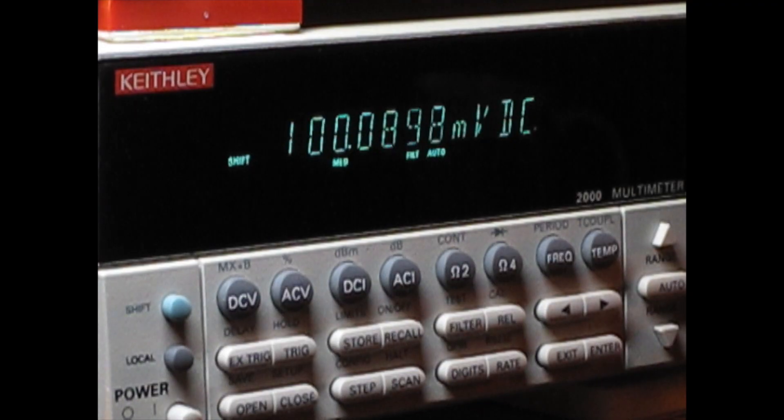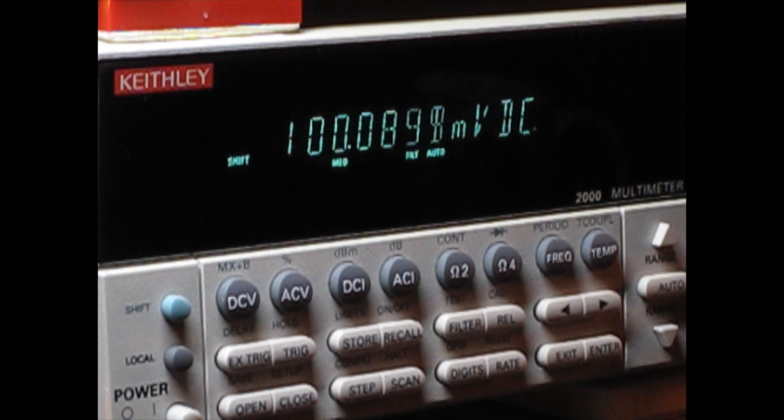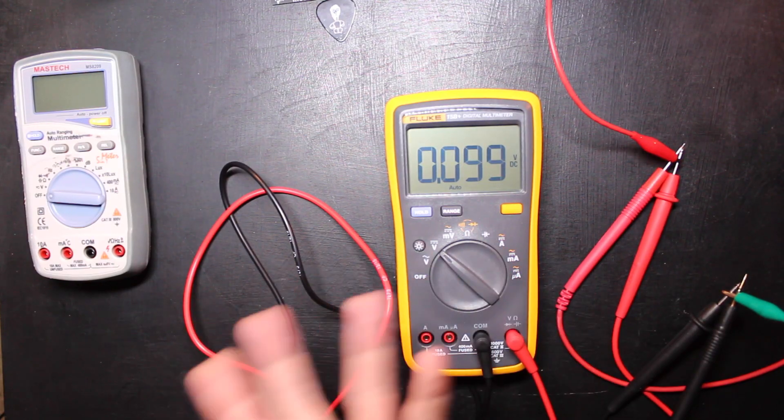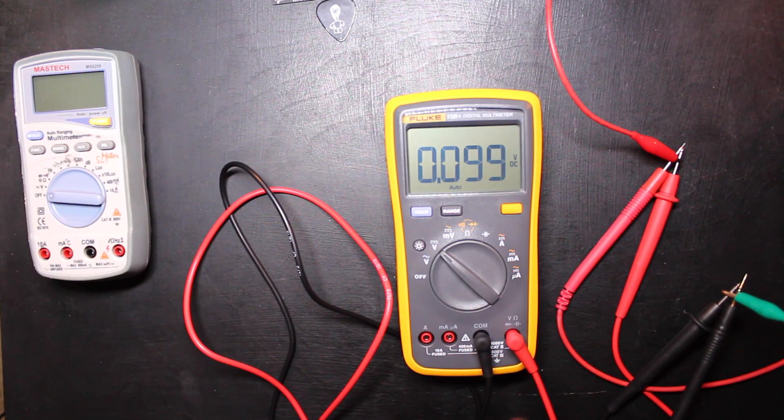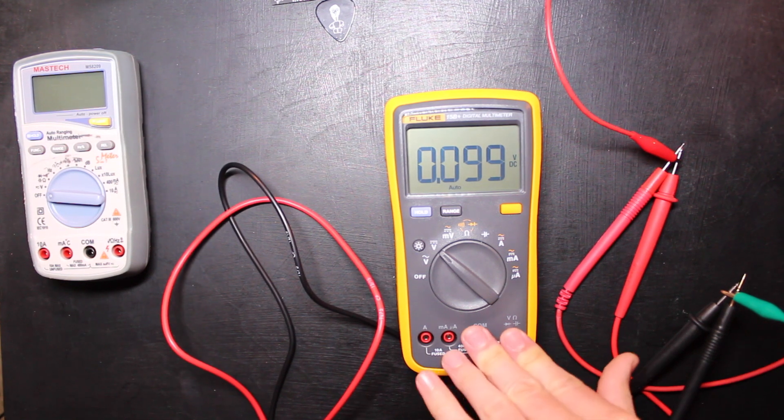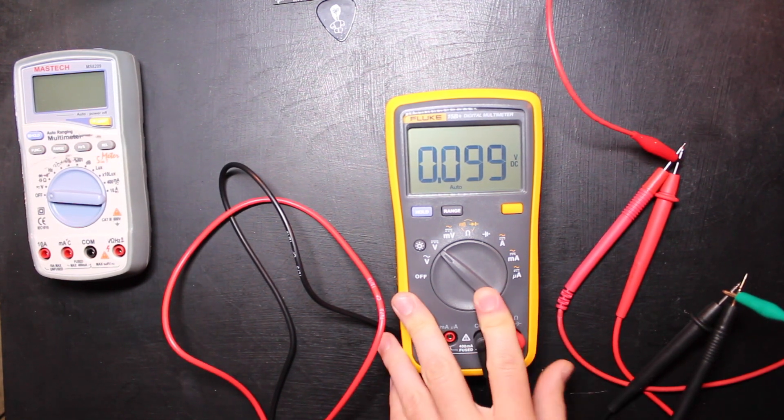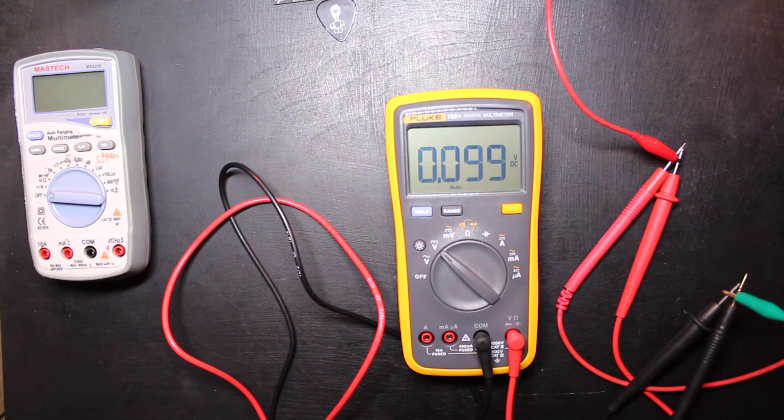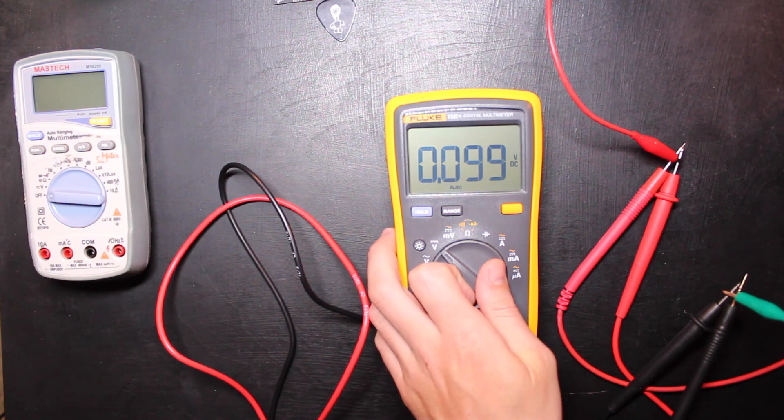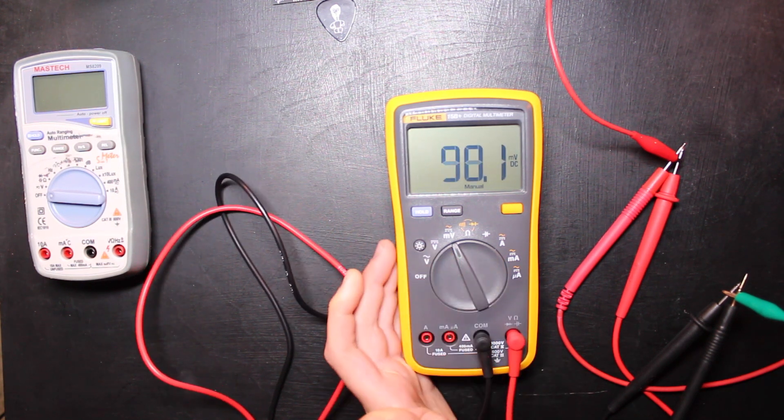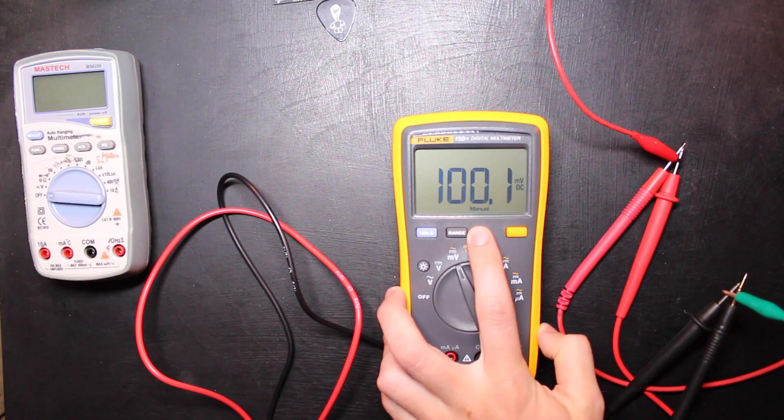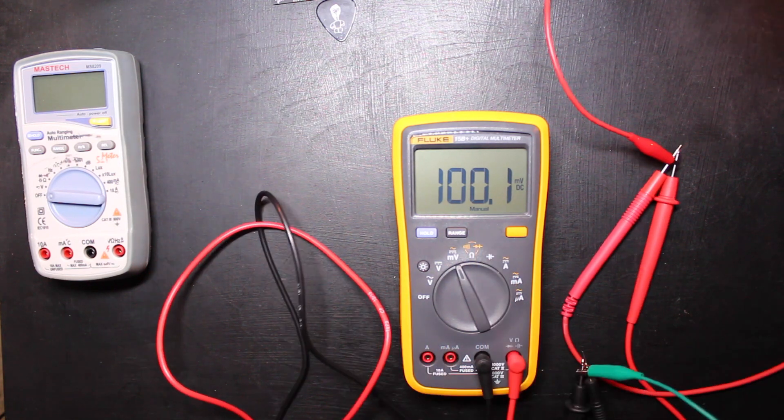Over on the Fluke we're getting 0.099. Again, we're measuring a DC voltage here and I'm using a Keithley 2400 source measure unit as the supply for this. So that's not too bad—let's throw it over to the millivolt scale here. There we go, so 100.1 and we've got 100.1 there up on the Keithley 2000, so that's pretty good.